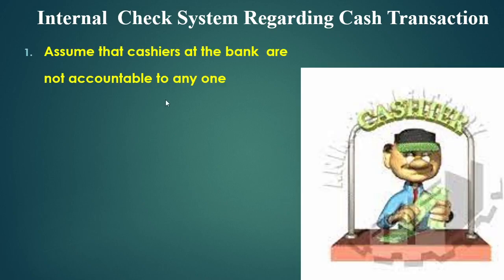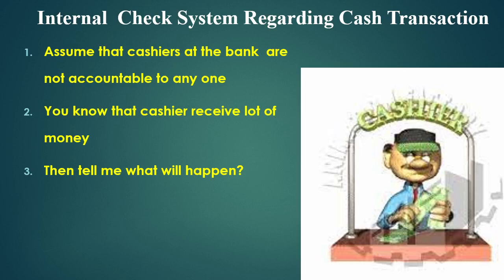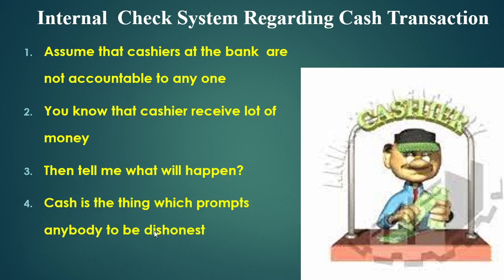Assume that a cashier at a bank is not accountable to anyone else — he is the sole responsible person. He receives the amount and makes payment also. He is not accountable to anyone. You know that a cashier receives a lot of money. So what will happen if he is not accountable to anyone else, or no other person checks how much he is receiving or giving? Nobody is going to overlook his activity. In that situation, cash is a thing which prompts anybody to be dishonest.